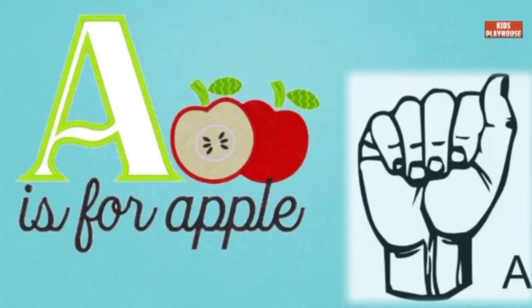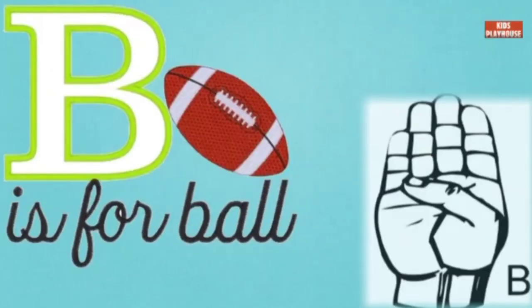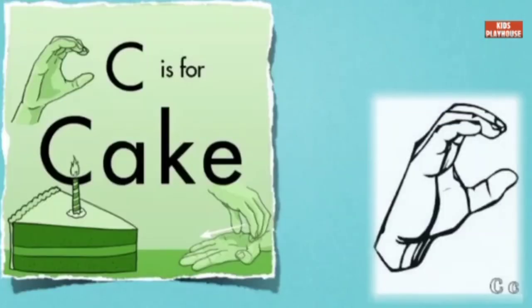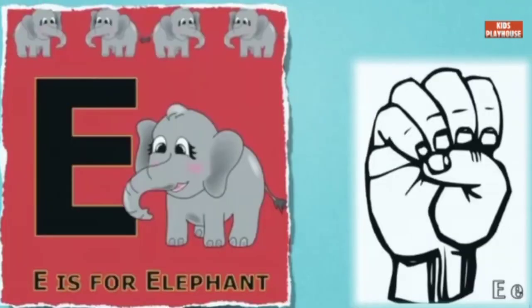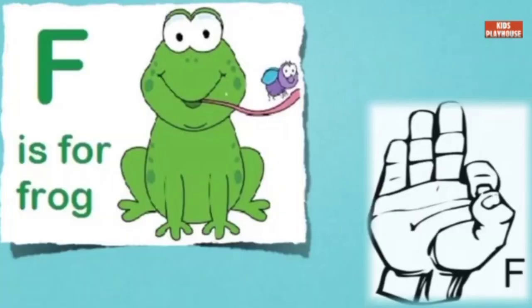A is for apple. B is for ball. C is for cake. D is for duck. E is for elephant. F is for frog.